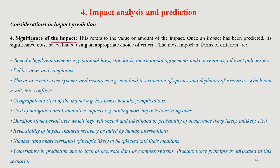Next is the significance of the impact. Once an impact has been predicted, its significance must be evaluated using an appropriate choice of criterion. The most important forms of criterion are specific legal requirements — for example, national law, standards, international agreements, conventions, and relevant policies. Then there are public views and complaints — for instance, if a project started without proper EIA and people found issues, they complained and an exercise was initiated.